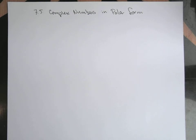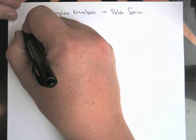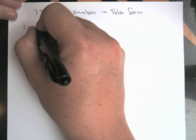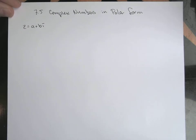Alright, one last kind of quick run-through for 7.5. What we're doing here is we're sort of combining our complex numbers. So that's right, our values, z equals a plus bi, with the sort of polar coordinate system.